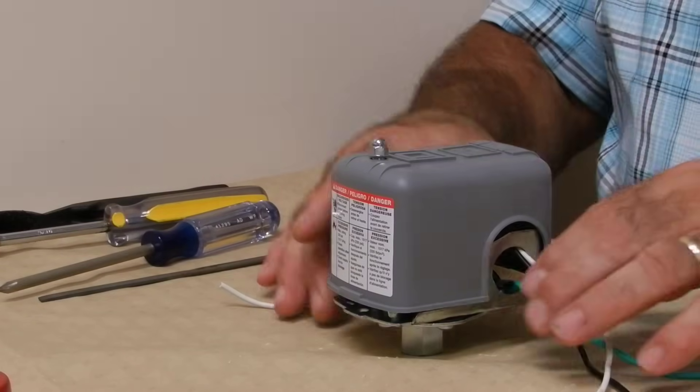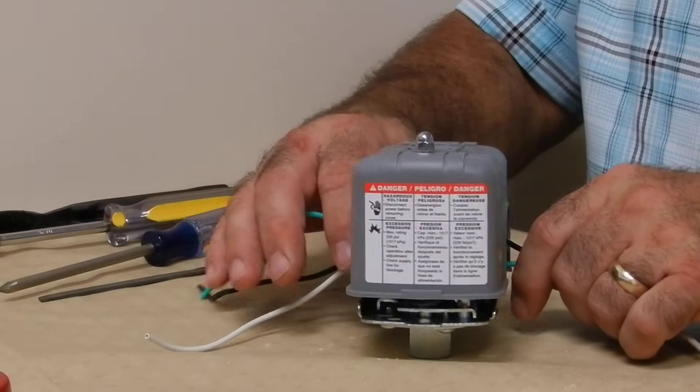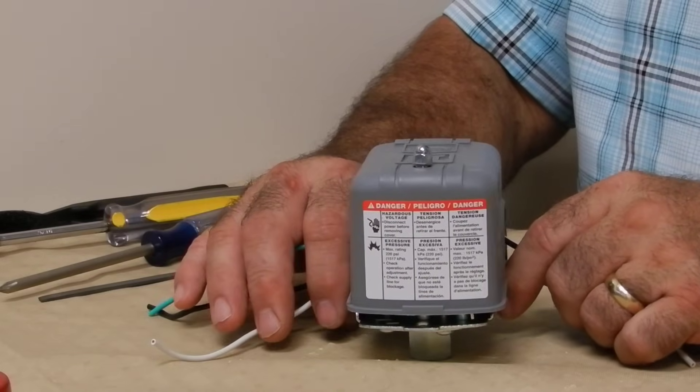Go out and find your pressure switch. It looks something like this, a small gray box with wires and a pipe attached to it. It's near the well.